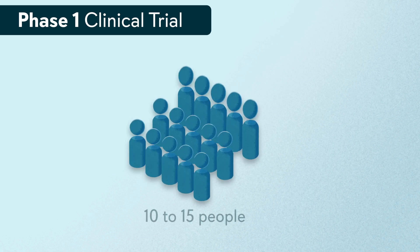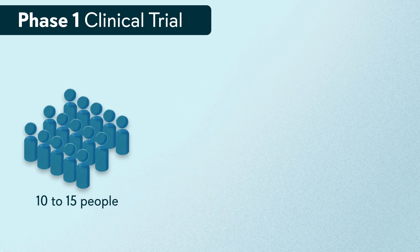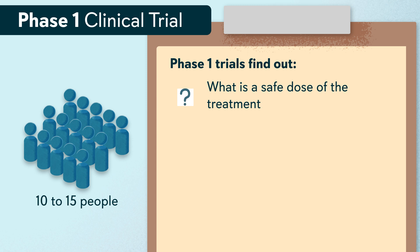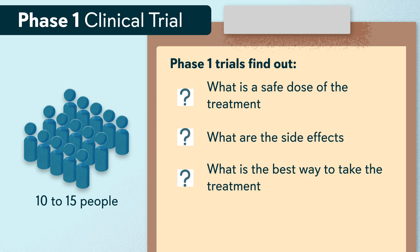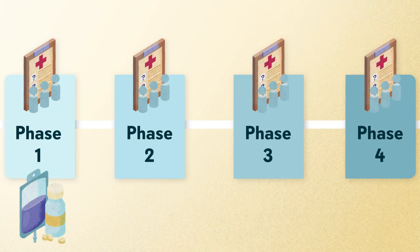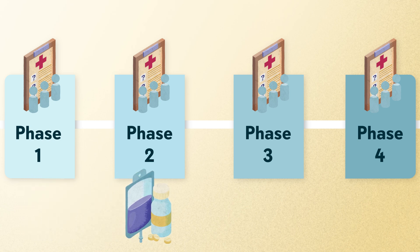Phase one trials are usually small, with about 10 to 15 people. The aim of phase one trials is to find out: what is a safe dose of the treatment, what are the side effects, what is the best way to take the treatment — for example, by mouth or into a vein — and how the new treatment affects the human body. Only a few treatments tested in a phase one trial will make it to a phase two trial.